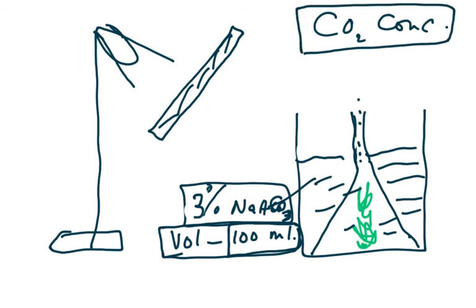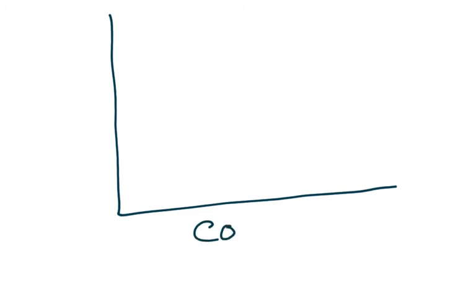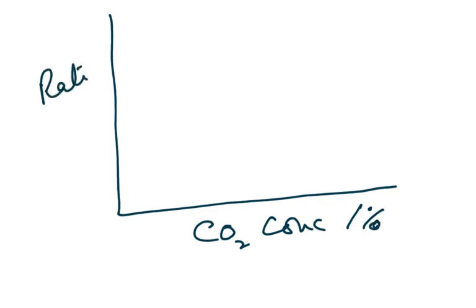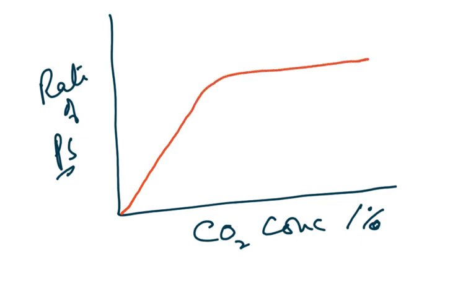You want to find out whether CO₂ concentration actually affects the rate — it is a hypothesis to be tested. Plot the results on a graph with CO₂ concentration (in percentage) on the x-axis and rate of photosynthesis on the y-axis. Note: 'PS' is not a standard abbreviation for photosynthesis — do not use it. The rate increases and then levels off.